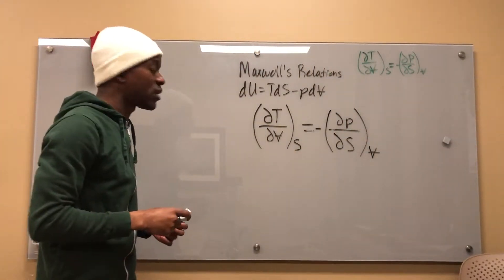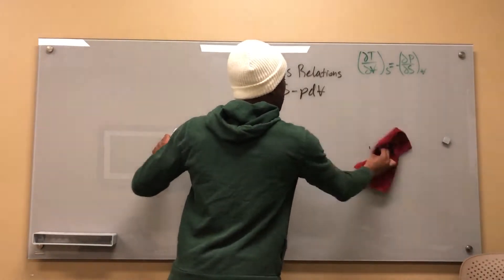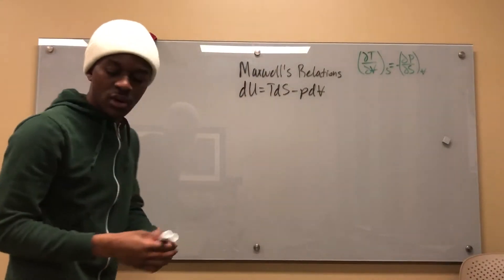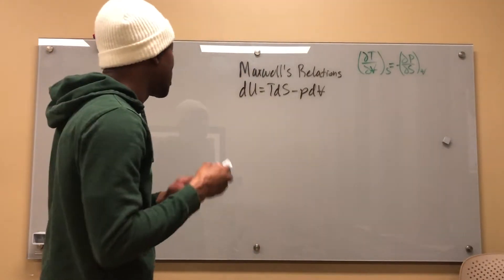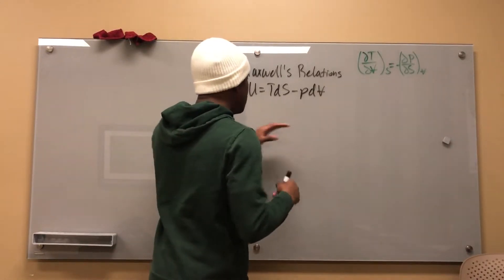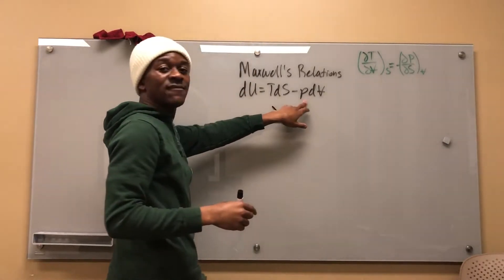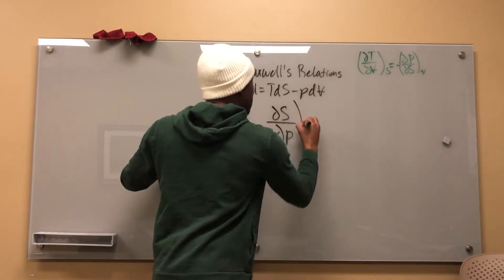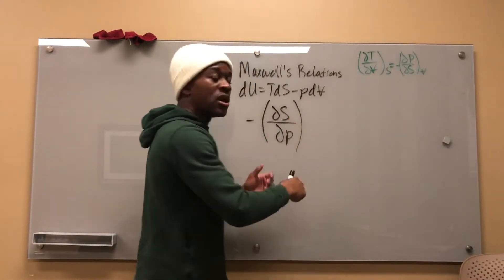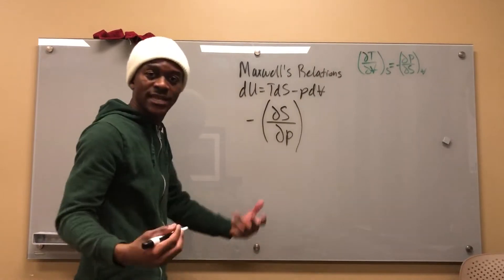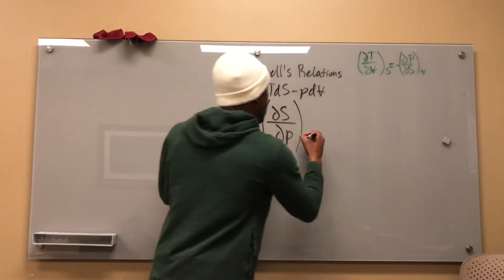There's our first Maxwell relation. You can also start with the back variables. Starting with a back variable first, then going to the front variable, then a back variable: I take del S — the back variable of the first term — and then del P — the front variable of the second term — pulling the negative outside, at constant S.